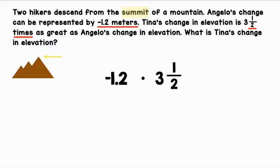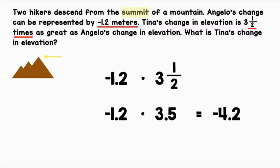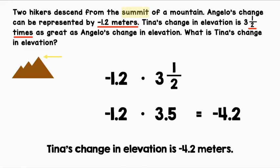We have one decimal and one mixed number, so let's make sure all of our rational numbers are in the same form. I'm going to convert the mixed number to decimal form. We have negative 1.2 times 3.5 — where 3 is a whole number and 1 divided by 2 is 0.5. Negative 1.2 times 3.5 equals negative 4.2. The answer is negative because we have one negative multiplied by one positive. Tina's change in elevation is negative 4.2 meters.